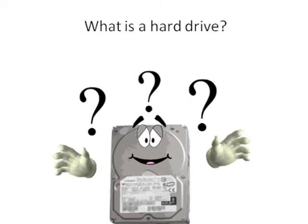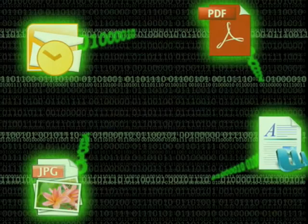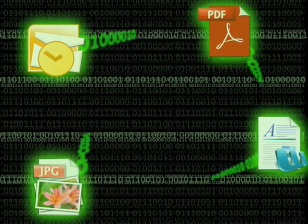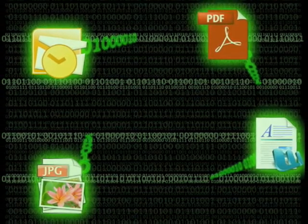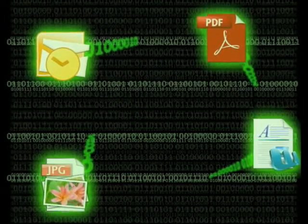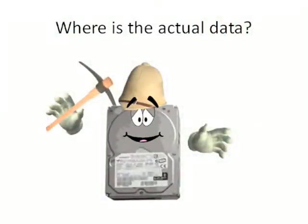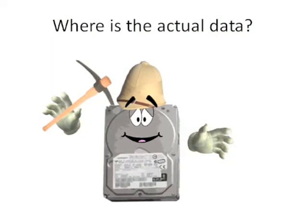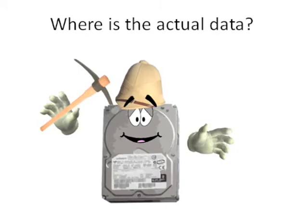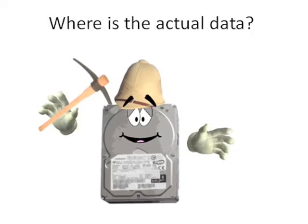How does it store this information? All data is stored in its most basic form as a series of ones and zeros. These ones and zeros are physically stored as a positive or negative magnetic charge inside the hard drive. But where is the data actually stored inside this thing? To answer, we'll put on our explorer's helmets and delve into the innards of a hard drive.